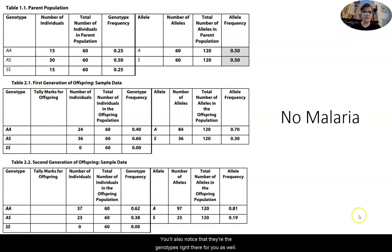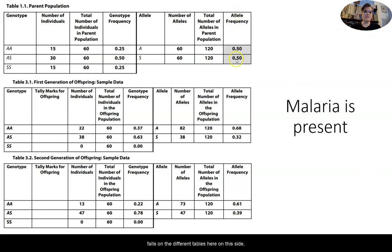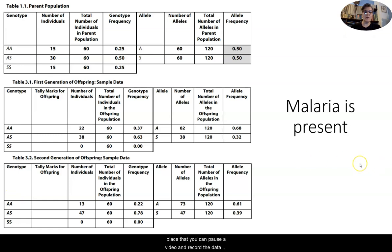This particular section is where malaria is present, so make sure that you're attentive to that. That's actually the second section on the front page. Your allele frequency column falls on the different tables on the right-hand side of the data, and you have your genotypes over here as well. This would be another place that you could pause the video and record the data you need to help you fill in the sheet.